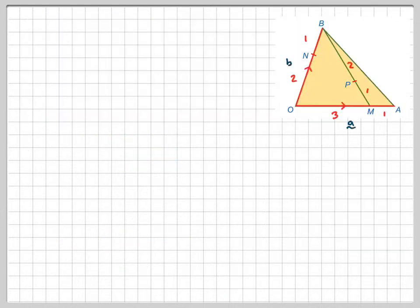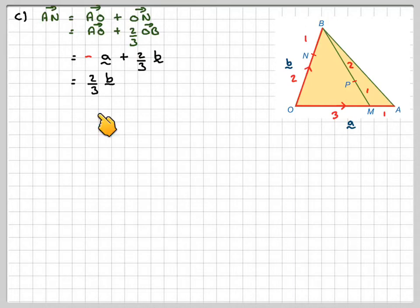Carrying on, we had to find the vector A to N, so we have to go from here to here, so we're going to go AO plus ON. AO is okay, but ON is two thirds along OB. So that's going to be minus a because we're going against it, plus two thirds of b, because OB is b. And then we'll rewrite that the other way around, so it's two thirds of b minus a.